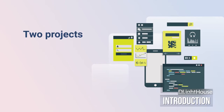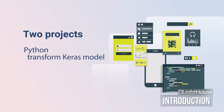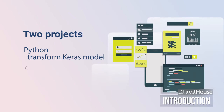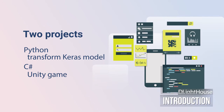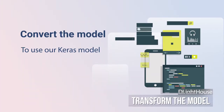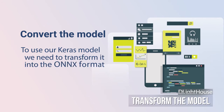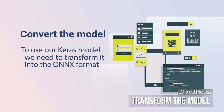For the complete application we will have two projects: one using Python for transforming the current Keras model, and another one using C# for loading the model in Unity. To be able to use our Keras model inside Unity, we need to transform it into the ONNX format — we will do this using Python.